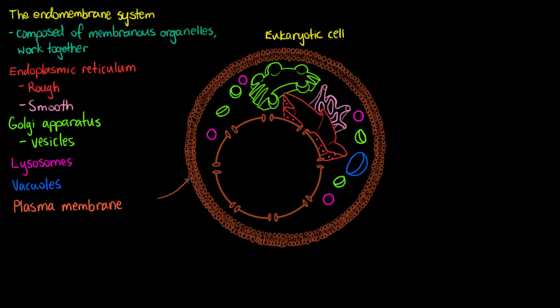And before you get kind of confused and say, well, the plasma membrane is not a membrane within the cell. So how can it be part of the endomembrane system? We classify it as part of the endomembrane system because of its activity and because it's working closely with all of these other intracellular organelles.